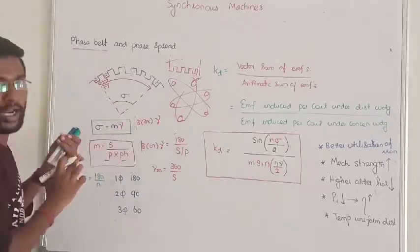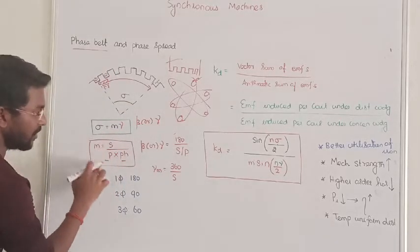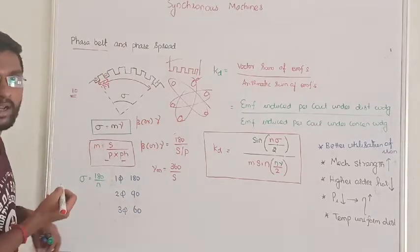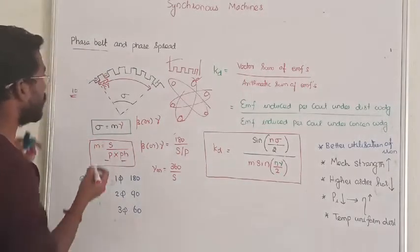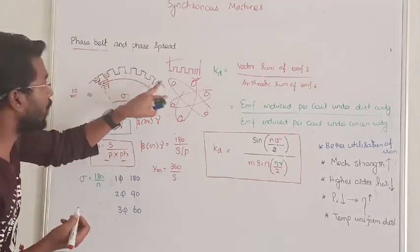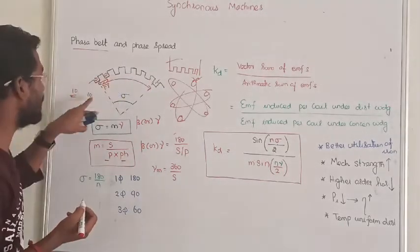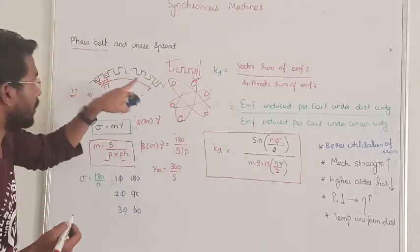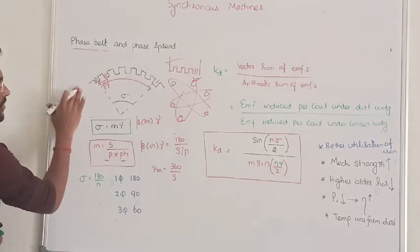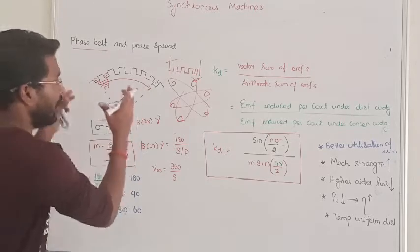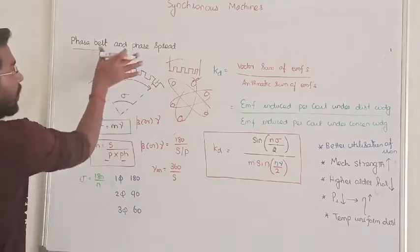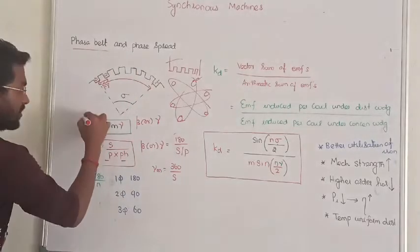Per pole per phase — how many slots are there? If you have 10 slots there, M will be 10. If in gamma order we have 10 degrees, and we have 10 slots, the total angle will be 10 into 10 degrees. That is how we are calculating face spread — how effectively slots are spread per pole per phase. That is called face spread.